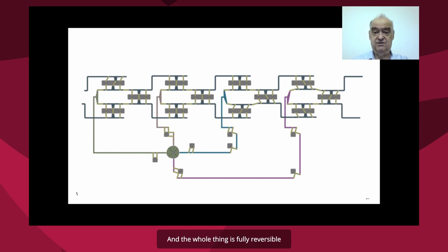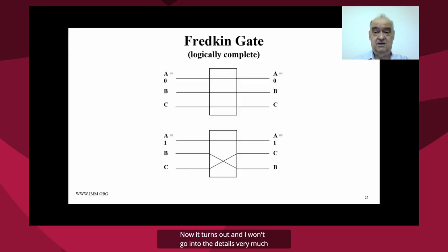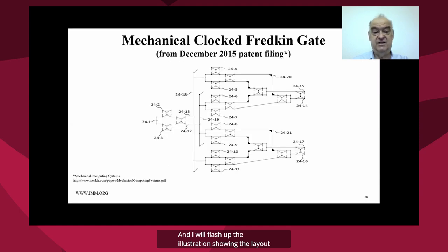And the whole thing is fully reversible and has very low energy dissipation. Now, it turns out, and I won't go into the details very much, I'll simply assert that you can make a Fredkin gate out of the same kind of locks. And I will flash up the illustration showing the layout for Fredkin gate using logic cells. So you can see the same kind of memory cells connected to each other, but now forming a Fredkin gate. And if you're interested, you can go off and look at how that design works and think about it. But it's basically the same concept, but laid out as a Fredkin gate.